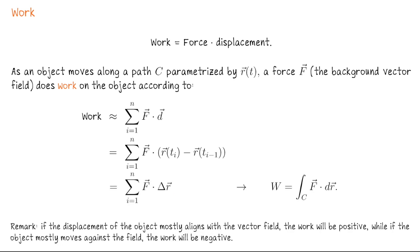The sign of the work depends on whether or not the displacement of the object mostly aligns with the vector field or against it. So if our object moves in a direction which points mostly in the same direction as the vector field, the work is positive; if we move against the vector field, the work is negative.